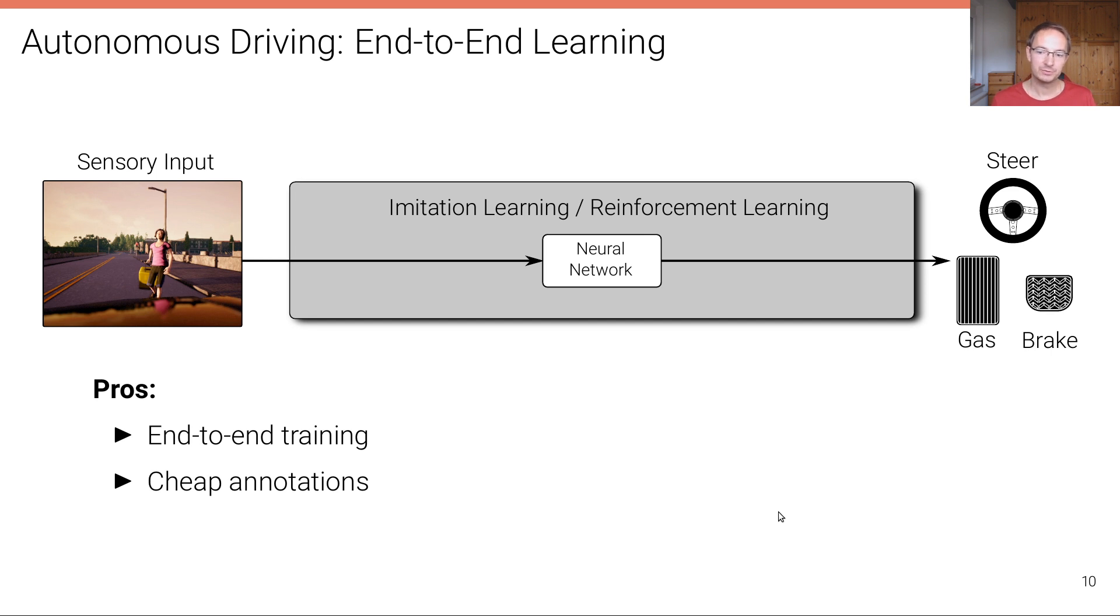The advantages of end-to-end training or end-to-end learning are that they are end-to-end, which means we are optimizing for what we actually care about, the driving task. And at least for imitation learning, annotations are relatively cheap because you just have to attach a camera to the car and also sensors to the steering wheel and to the activators, and then you have to drive around and you automatically collect data. The disadvantages, however, are that these models do not generalize as well as the modular pipelines yet, and they also lack interpretability.